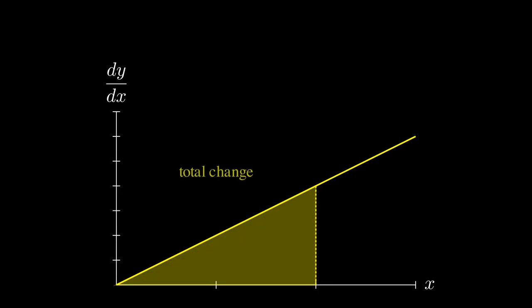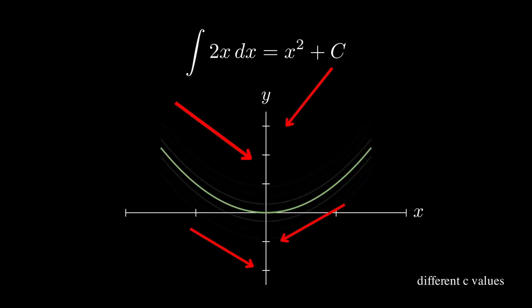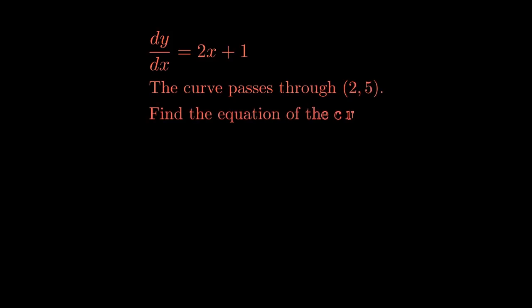And so integration finds the total change. But unless you know the starting point, you can't pin down the exact value. So we write plus c to say, in essence, there could have been any starting position. Now, sometimes the exam will give you that missing ingredient in the form of a point on the curve.